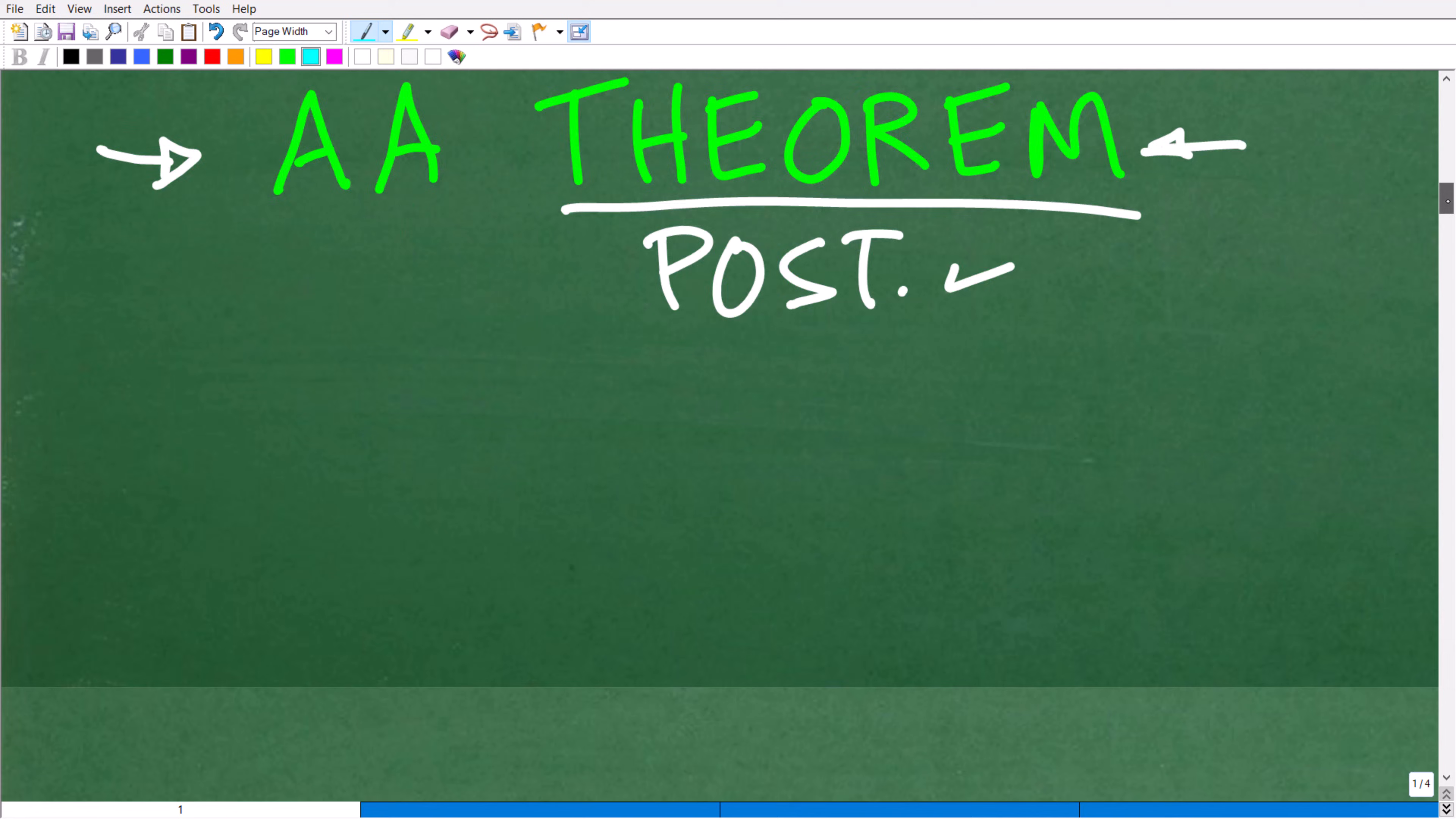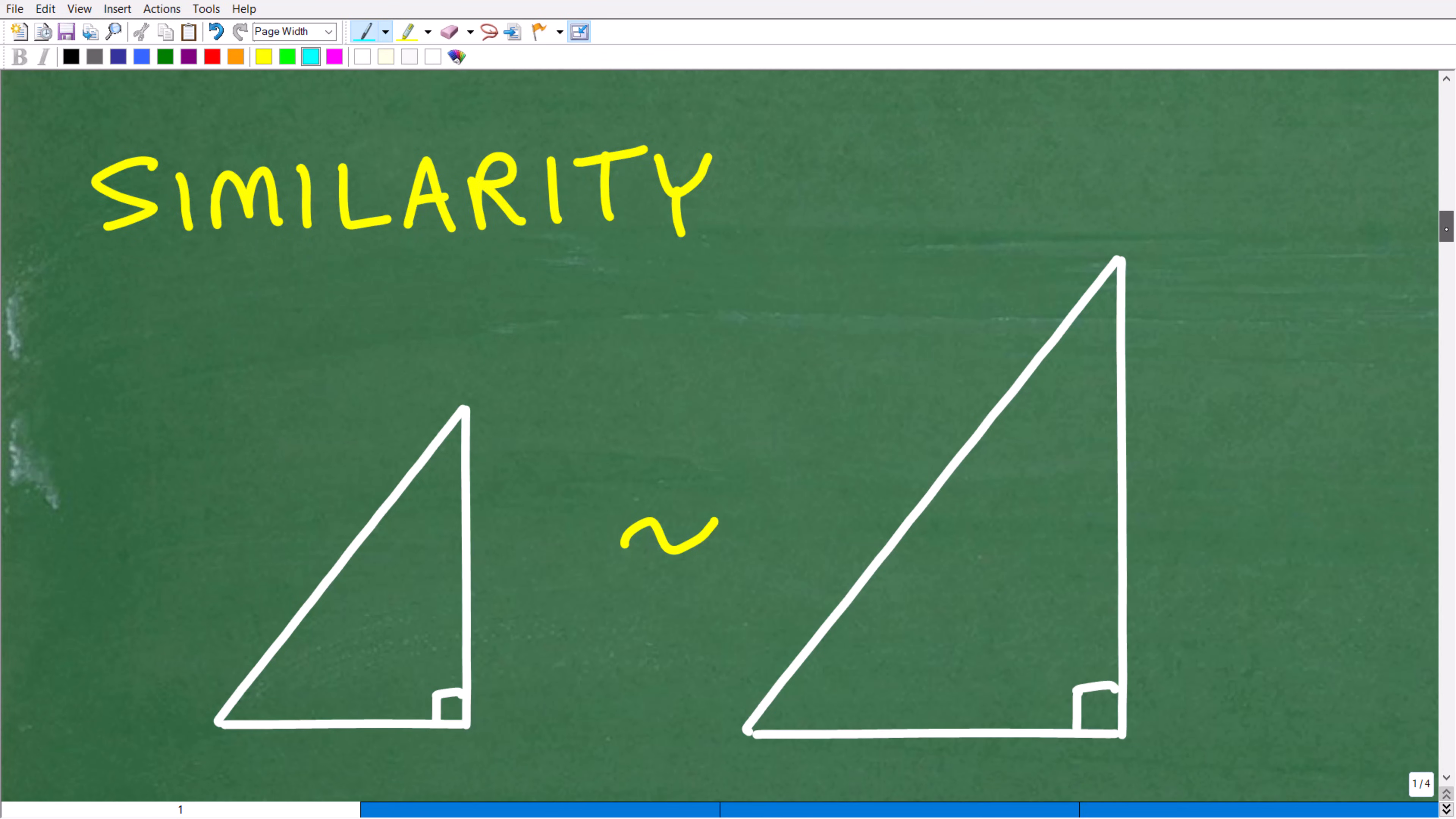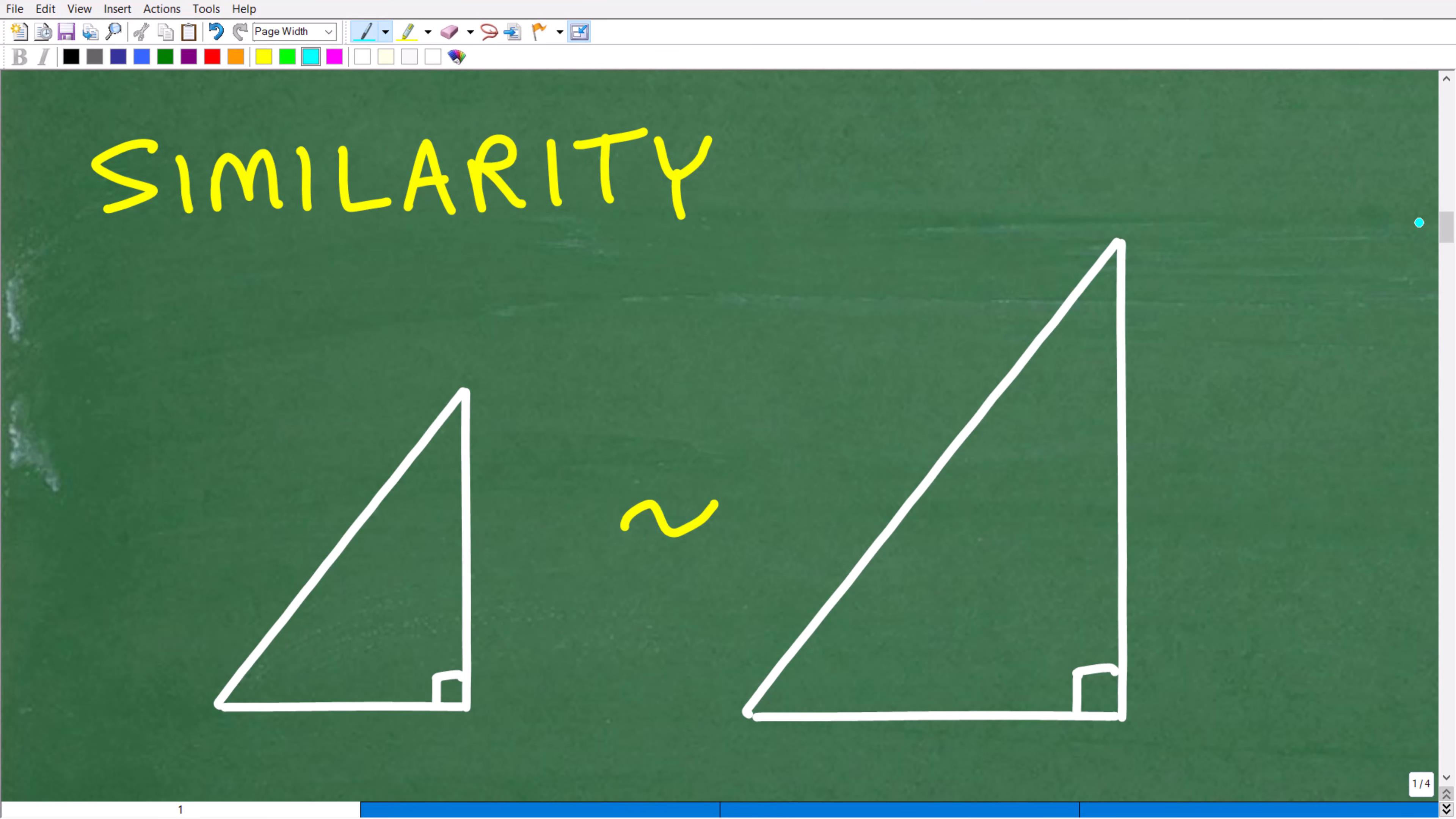So let's go ahead and talk about similarity. All right, so we're talking about similar triangles, but similarity can apply to any figure. And I love similarity because, basically, I think of it as the zoom-in or zoom-out property. So let's suppose I have this lovely triangle right here, and I zoom out, and I can make a copy of it, and here it is.